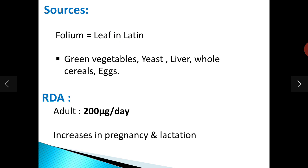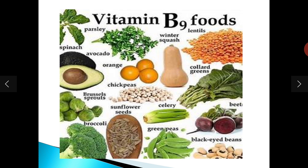Regarding sources — 'folium' is a Latin word meaning leaf, so green leafy vegetables are the rich sources of folic acid. Liver, whole cereals, and eggs are also food sources. The RDA (recommended dietary allowance) is 200 micrograms per day, and it is increased during pregnancy and lactation.